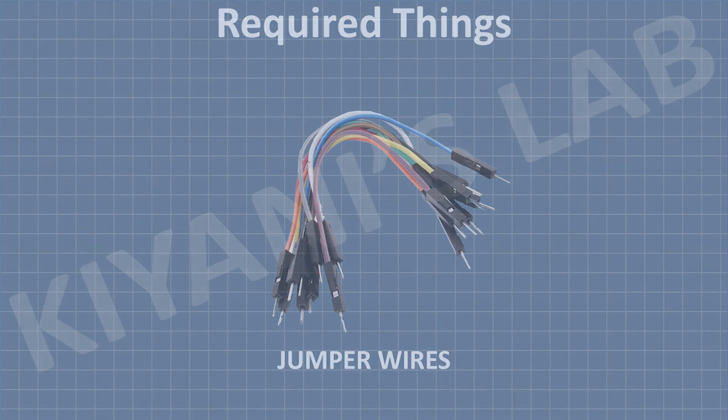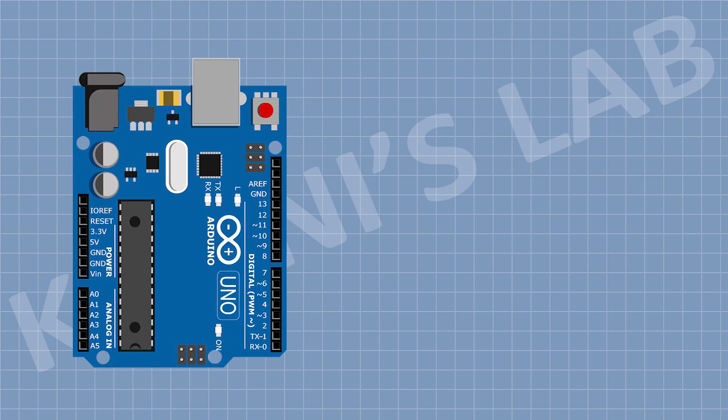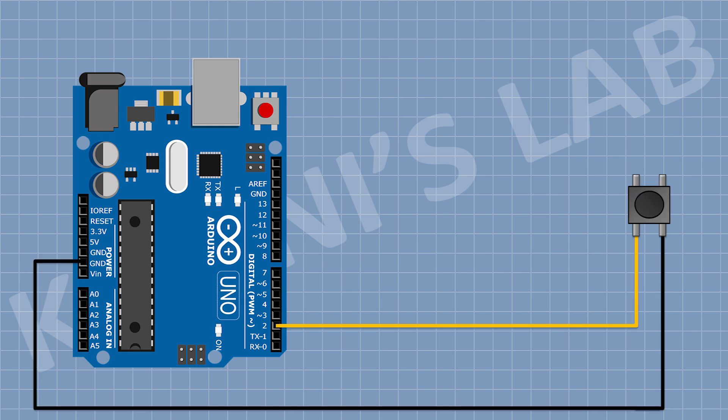Now let's see the connections of the project. First, connect Arduino and connect its 5V pin to the 5V supply and its ground to ground. Now connect a push button — connect its one pin to pin D2 of Arduino and its other pin to ground. This button is for speed control. Now connect another push button — connect its one pin to pin D3 of Arduino and its other pin to ground. This button is for changing the color.